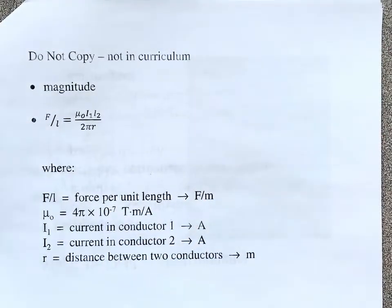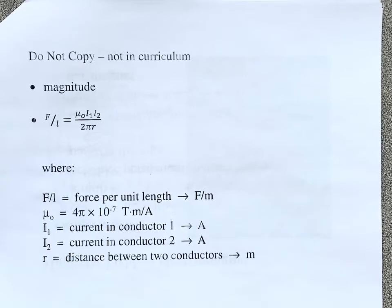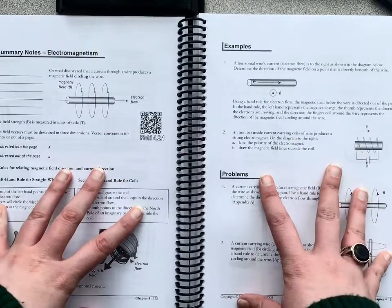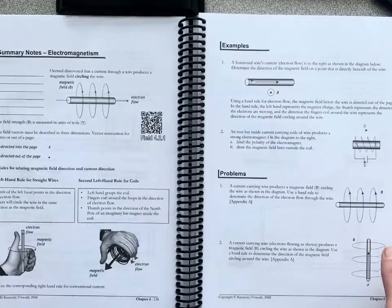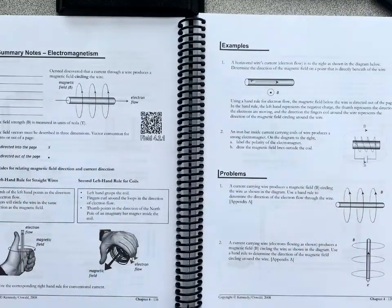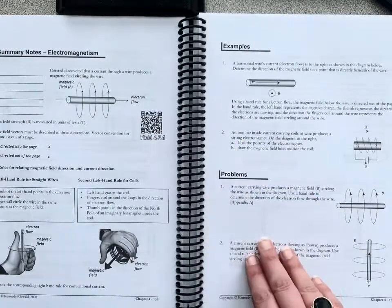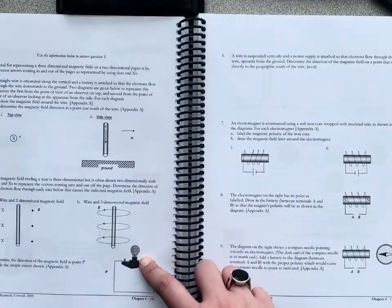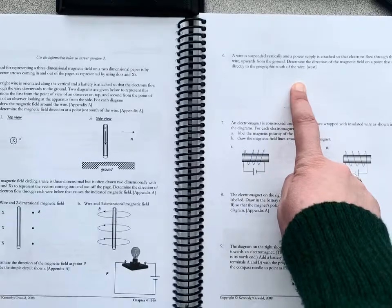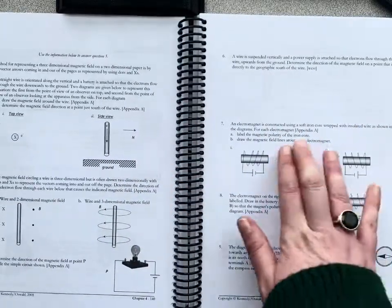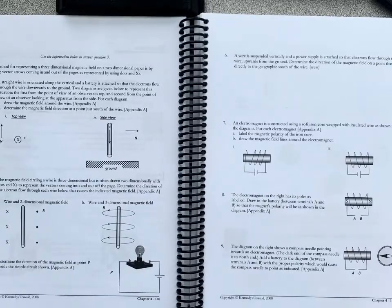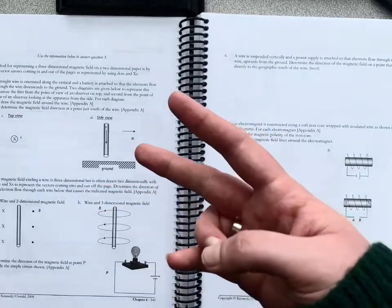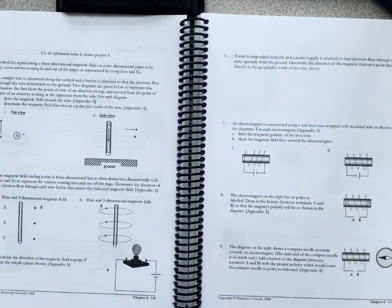That is the first hand rule. For practice, I'd recommend page 139 (first two problems), page 140, and page 150, question 6 — those are all first hand rule questions. A lot of people think they've got it, and then when they actually have to use it, they completely lose their mind, so please do those questions. After that, move on to the second hand rule, which deals with solenoids.